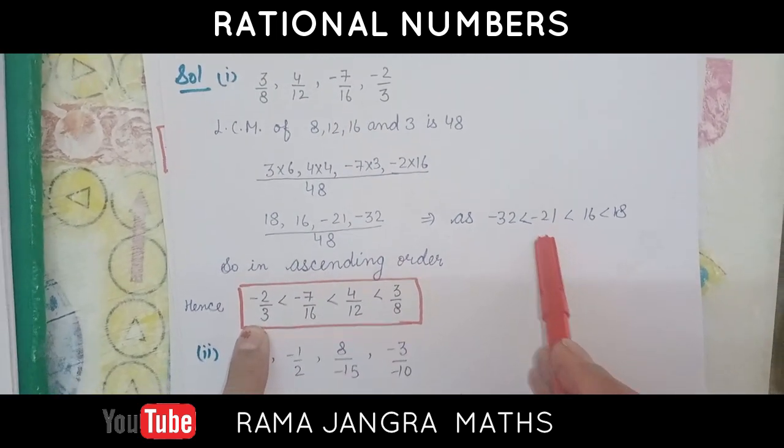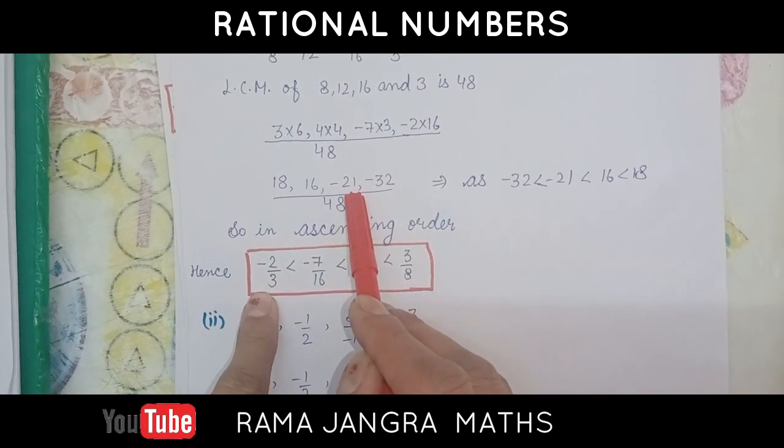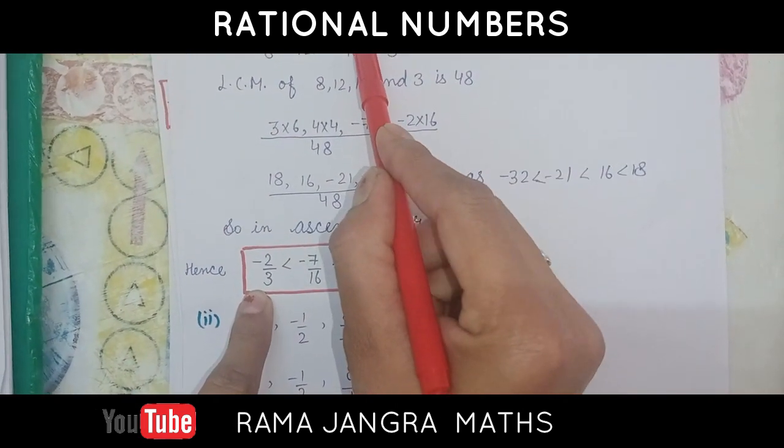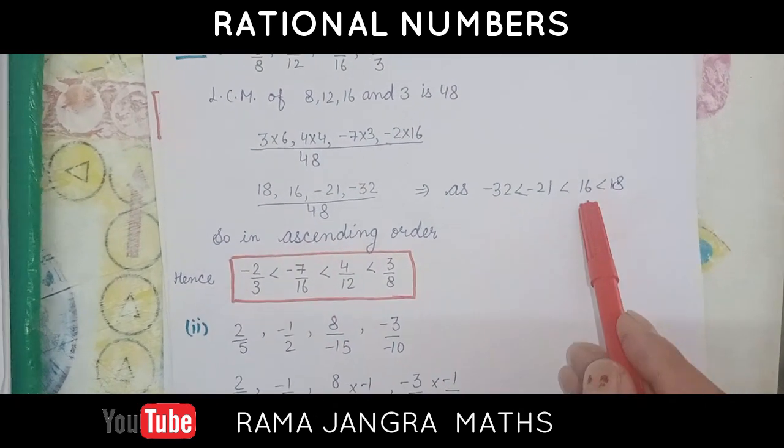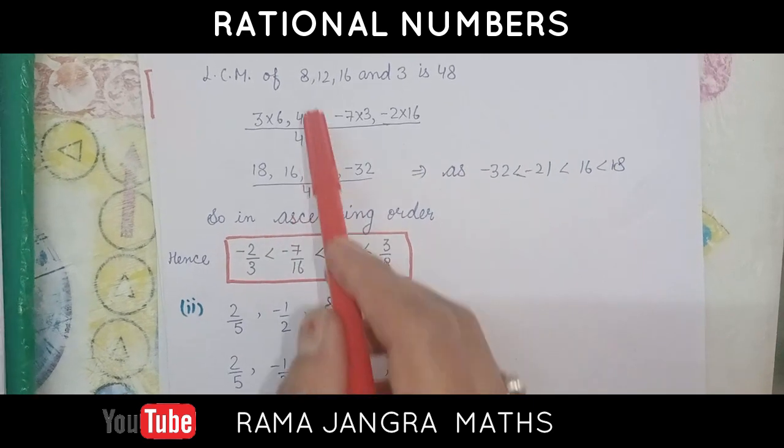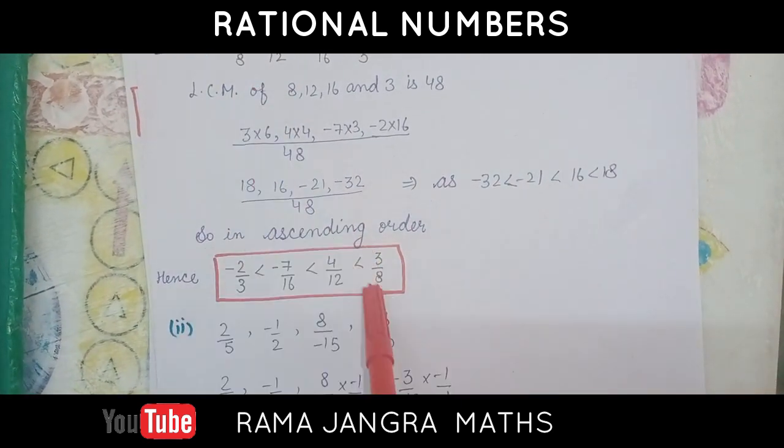Next one is minus 21. Here, you have to check where is minus 21. That is third place. Third place, what is here? Minus 7 by 16. Next one is 16. 16 is on the second place. 4 by 12. Last one is 3 by 8.